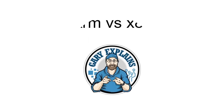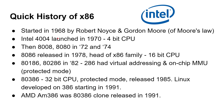To understand where we are today, it's good to look at some of the history of the x86 architecture and the ARM architecture. So let's quickly look at a history of x86 and Intel. Now Intel started in 1968 by Robert Noyce and Gordon Moore — that's Gordon Moore of Moore's Law. And if you'd like a video on Moore's Law, please do let me know in the comments below.